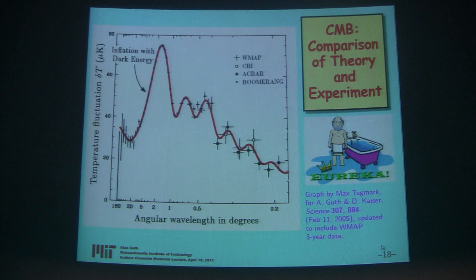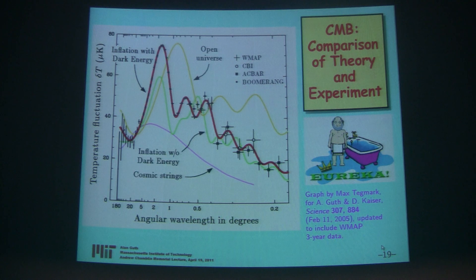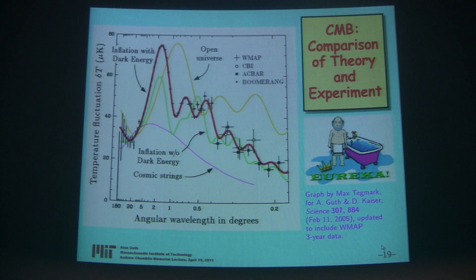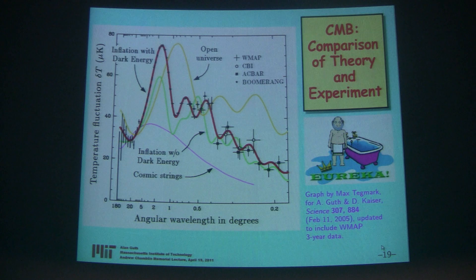Furthermore, you can ask about what other theories would predict, and we put a few on this graph. If the universe were an open universe — like people thought 12 years ago when astronomers told me inflation couldn't possibly be right whenever I had dinner with them — that's this yellow curve, which doesn't agree at all. You could also imagine inflation without dark energy; that produces this green curve, which doesn't fit at all. And about 10 years ago, a number of people thought that structure in the universe could arise from something called cosmic strings. But it doesn't fit the data at all, so nobody thinks that structure forms by cosmic strings anymore.